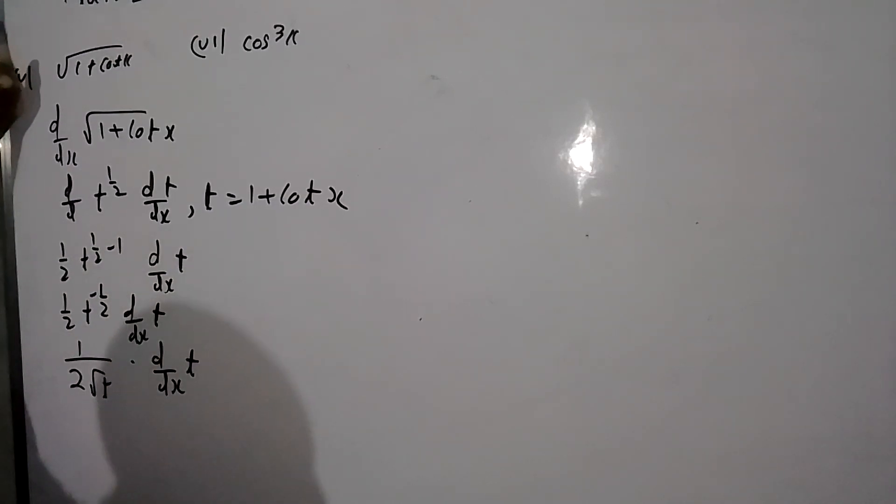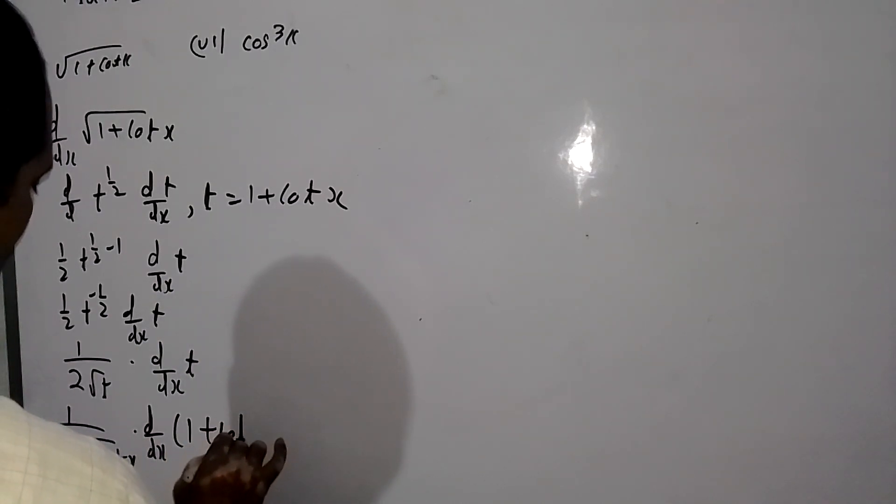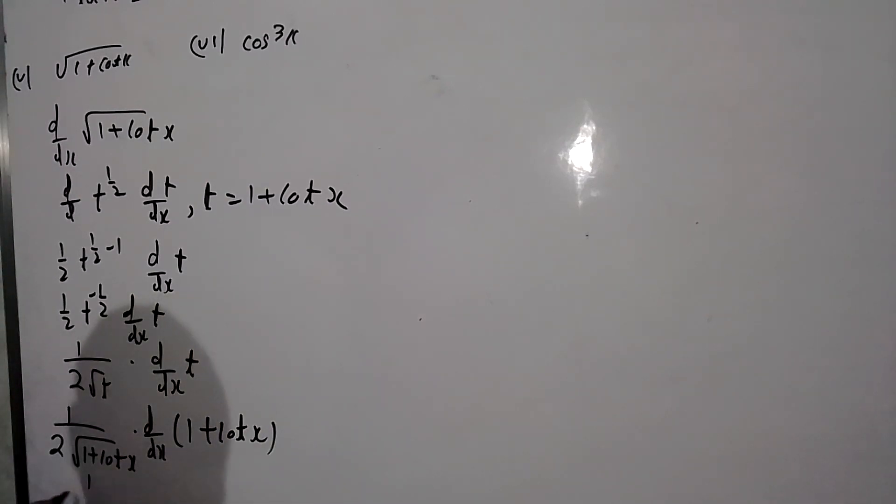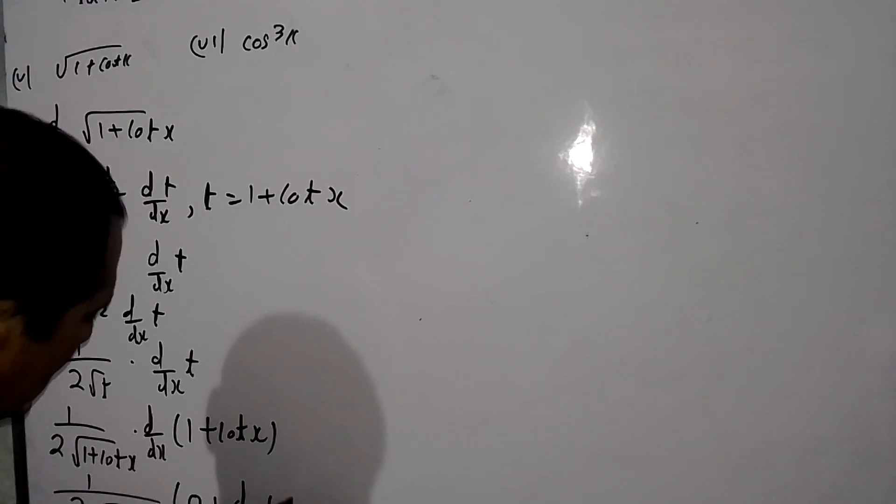d by dx of T. Now T value, put T. T value here, we have 1 upon 2 root 1 plus cotangent. d by dx of T. T value is 1 plus cotangent. T value is 1 upon 2 root 1 plus cotangent, plus d by dx of cotangent.